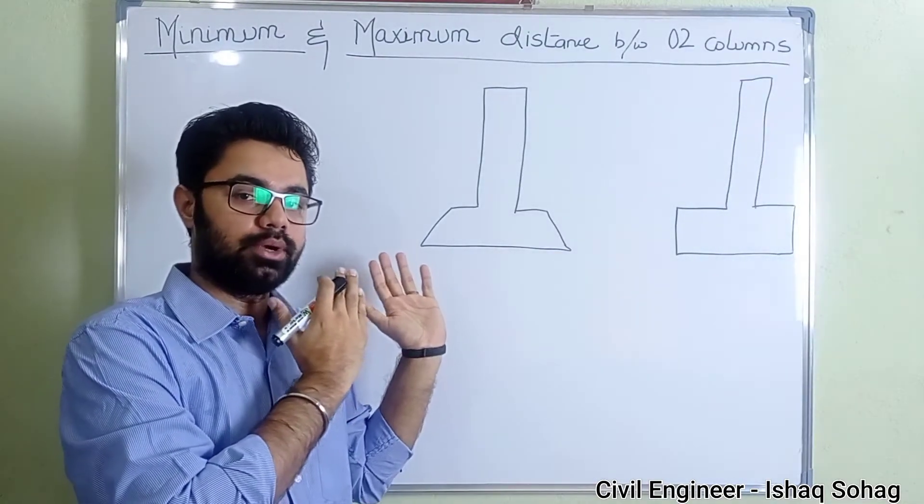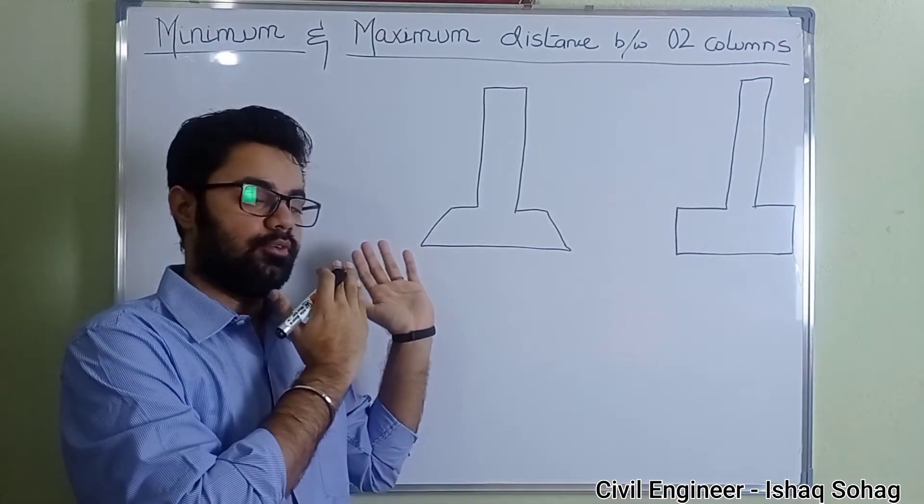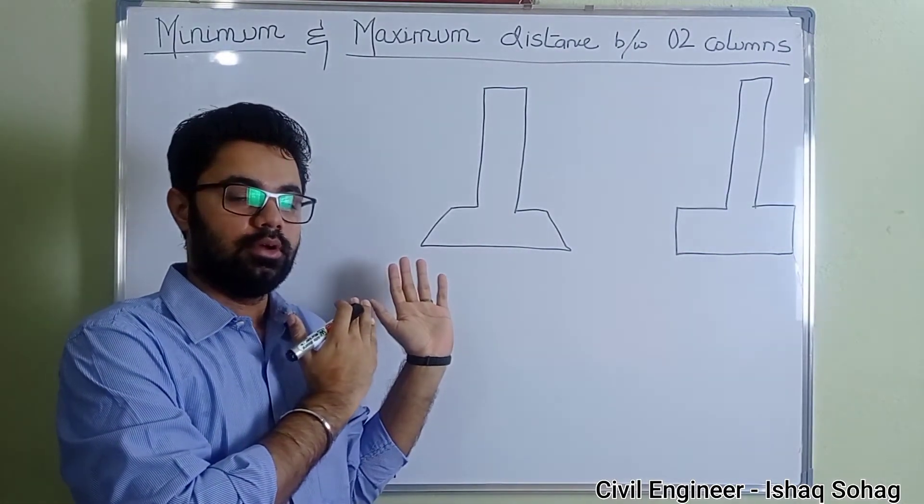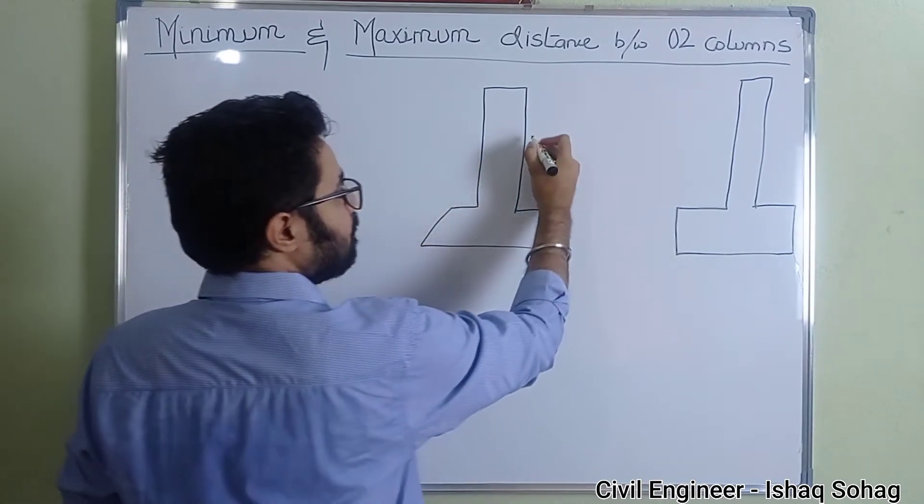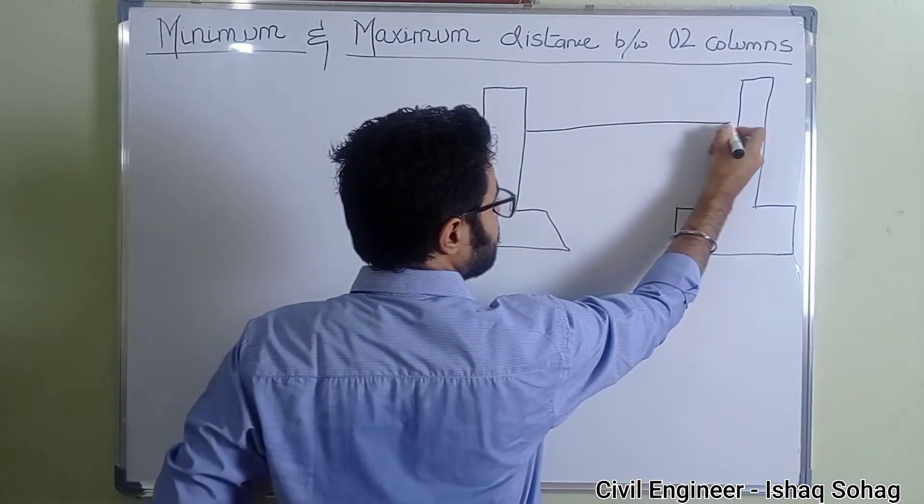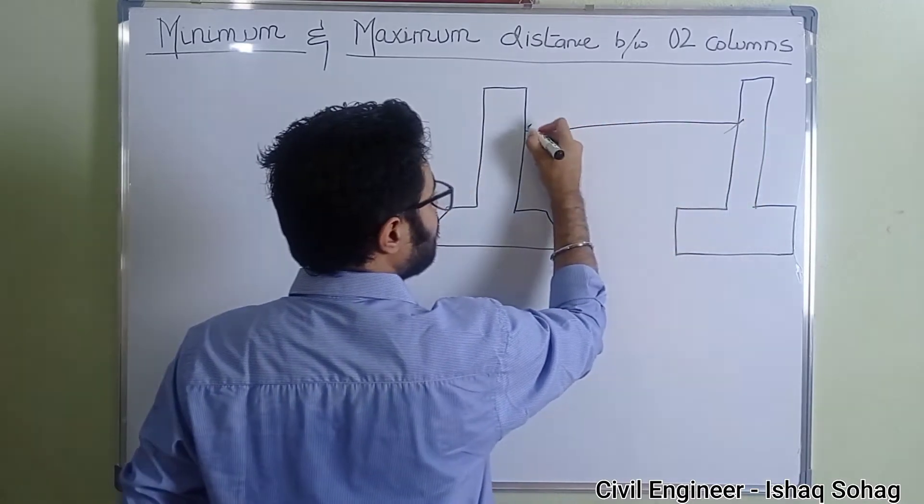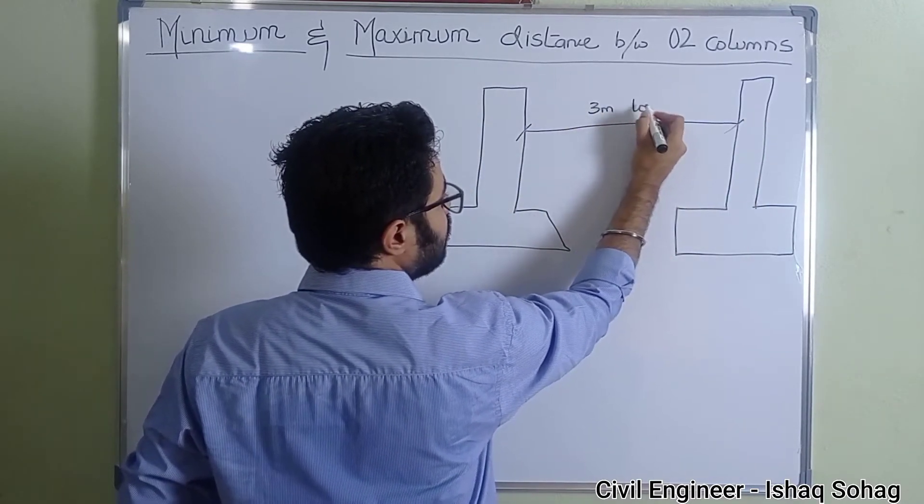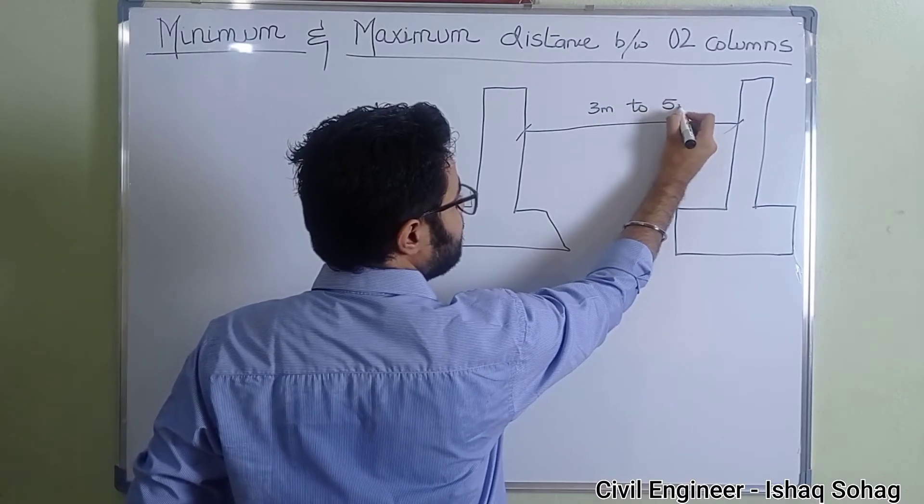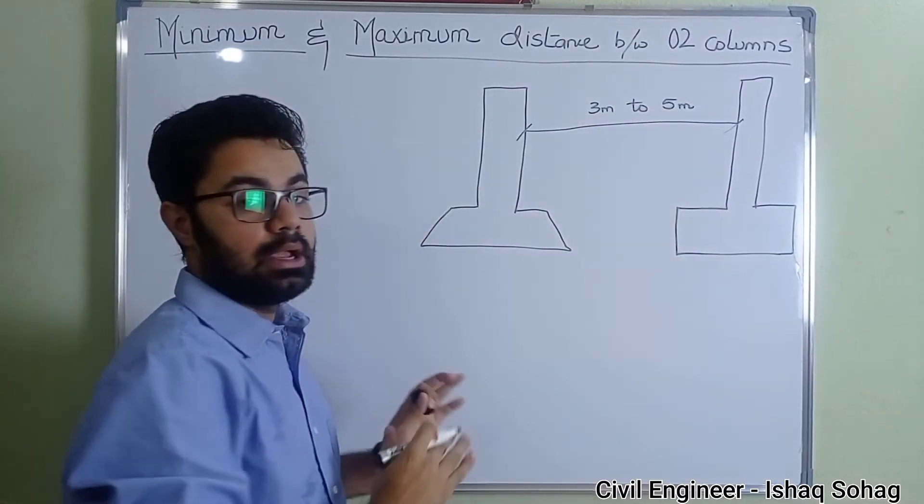So this is just a simple design that I'm going to tell you from practical experience. Here I got two columns. The minimum or maximum distance between them can be from three meter to five meter.